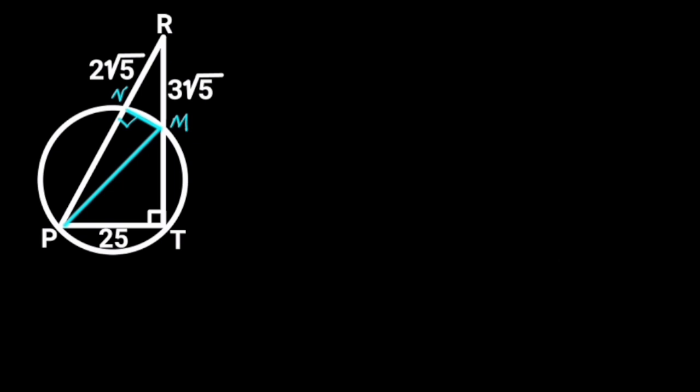Next, let's focus on triangle NRM. In triangle NRM, angle NRM is equal to 90 degrees. Reason: the sum of angles on a straight line is equal to 180 degrees. And this shows that triangle NRM is a right angle triangle.